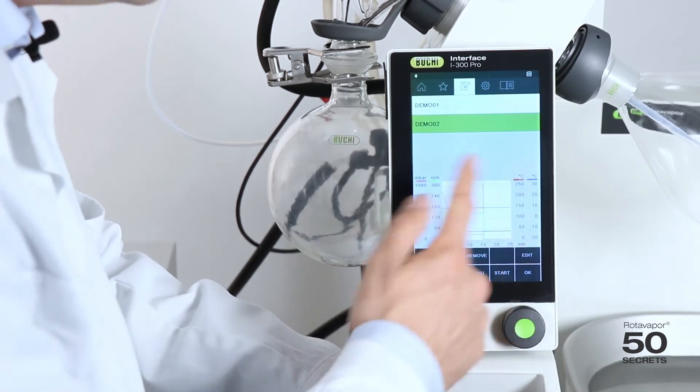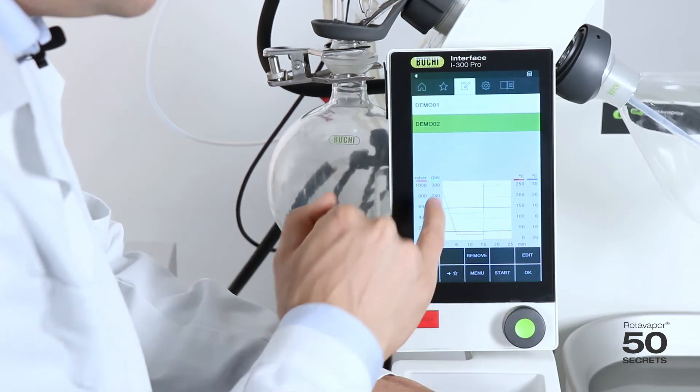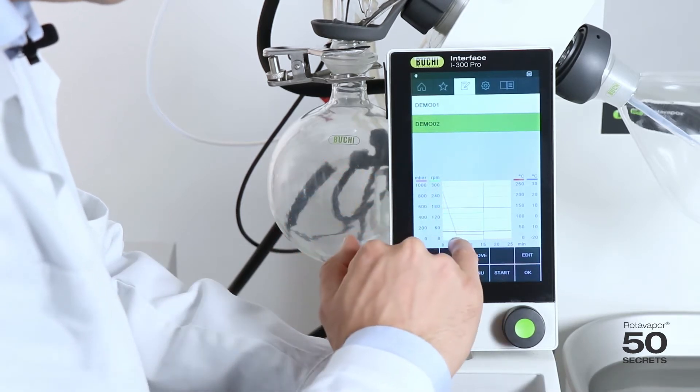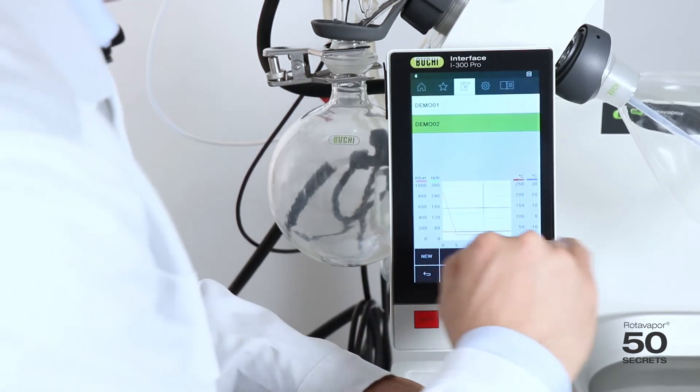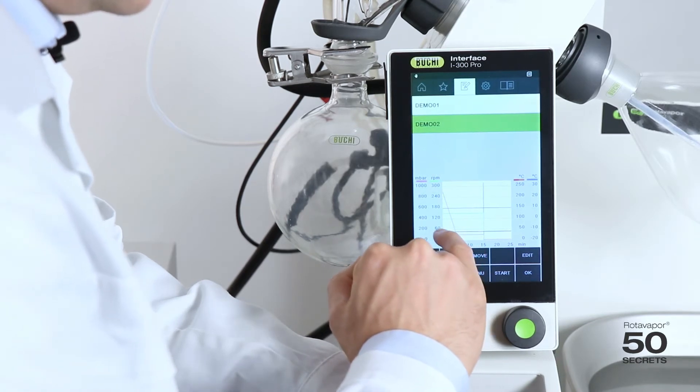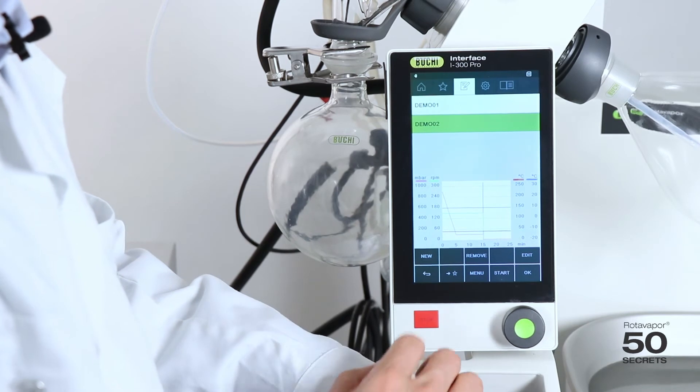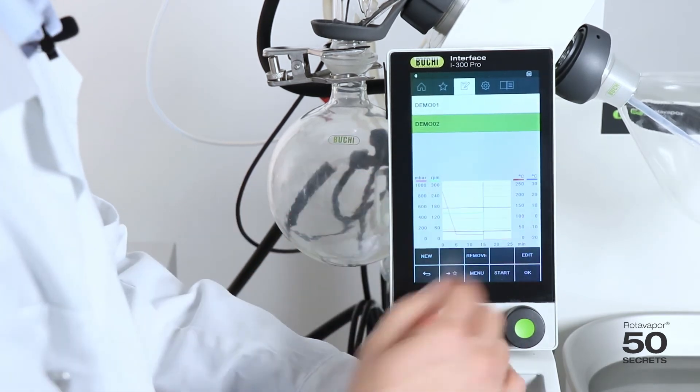And we see a very nice preview over here which says the pink line here starts at 900 millibar, goes down to 100 and then stays for 10 minutes at 100. Then we have a break and then it continues at 10 millibar. The heating bath temperature for example is 40 millibar all the time. So that chart allows you to quickly identify the method and understand what the method will actually do.